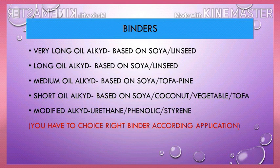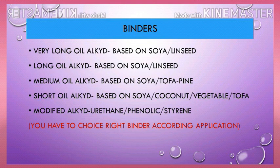First, we have to choose the right binder. Alkyd has different kinds of binder: very long oil alkyd, medium oil alkyd, short oil alkyd, and modified alkyd. Soybean is a common oil for alkyd binder. Coconut-based short oil is very popular for its clear color and good heat resistance. You have seen some modified alkyds like Urethyl, Phenolic, and Esterene — everyone has different benefits. So you have to choose the right binder according to your application.